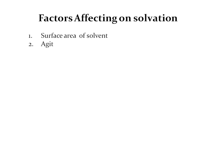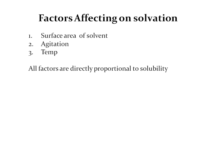Now we will see factors affecting solvation. First is the surface area of the solvent, then agitation, and then temperature. All these factors are directly proportional to solvation. As surface area of the solvent increases, the solvation process increases. As agitation increases, there is movement of the solute molecule in the vicinity of solvent, increasing solvation. As temperature increases, kinetic energy of the molecules increases, which increases interaction between solute and solvent, enhancing solvation.